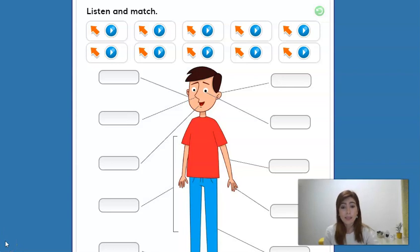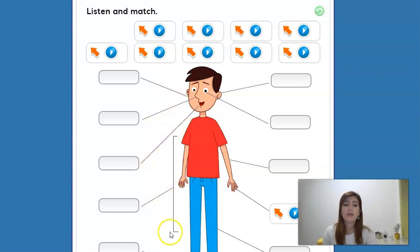All right, so now let's listen and match. First one here. All right, so where is the hand? Let's see. Here it is. Next. So his body is everything here, so here it is.